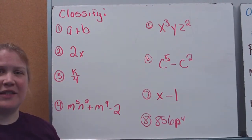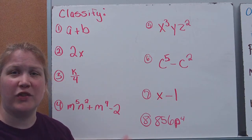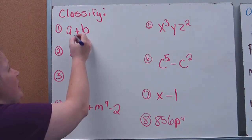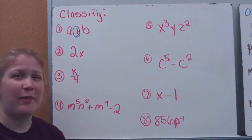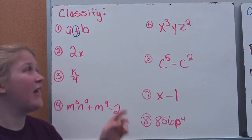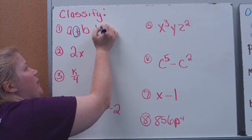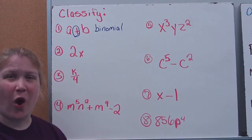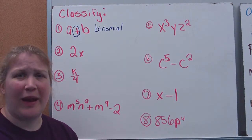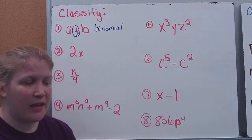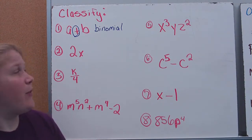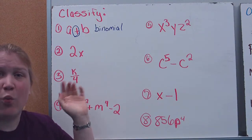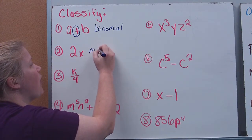So we're going to start out just by classifying these as monomials, binomials, or trinomials. What you want to look for is the sum or the difference. Here I see an addition sign, so that means it's the sum — I'm adding together two different things, so that means this is a binomial. There are two terms. Terms are always separated by addition or subtraction signs. And 2x — we're multiplying those two together, so this is only one term. This is considered a monomial.